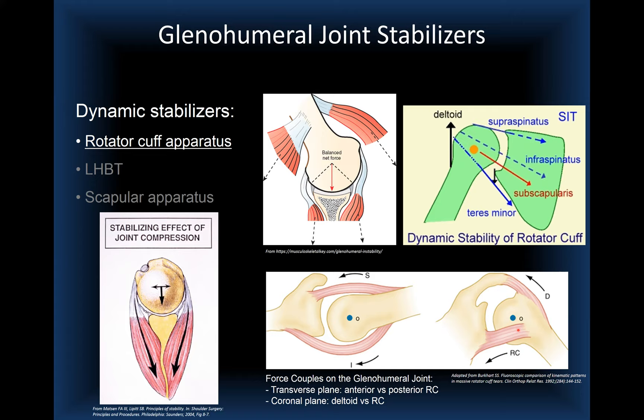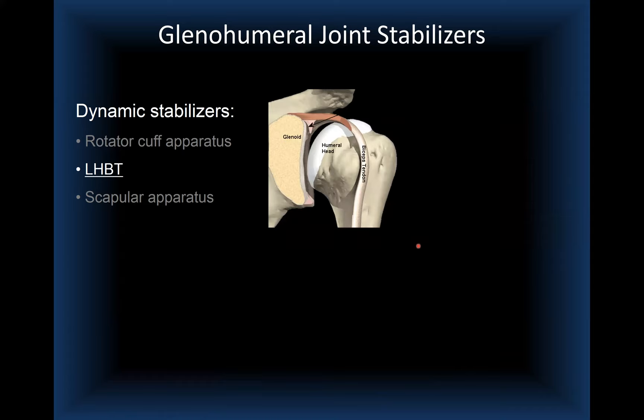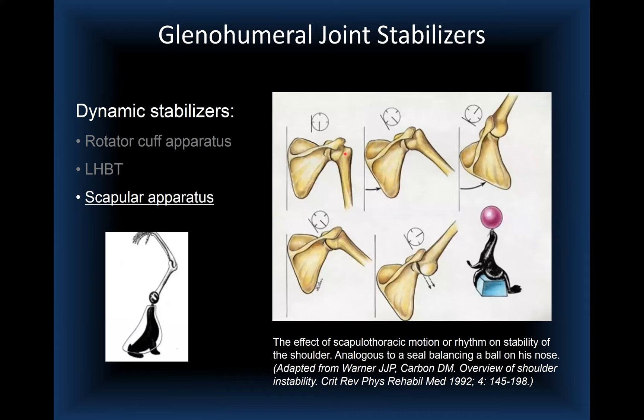The long head of the biceps tendon also plays a minor role in glenohumeral joint stability by virtue of its origin in the supraglenoid region and its course relative to the humeral head. The scapular apparatus also has a role. The scapulothoracic motion, or scapulothoracic rhythm, can be compared to a seal balancing a small ball on its nose.